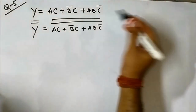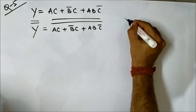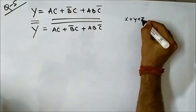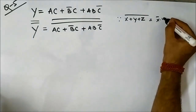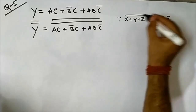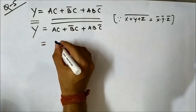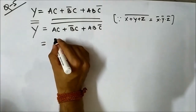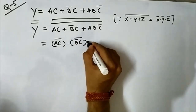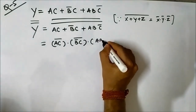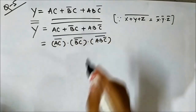Here we apply De Morgan's theorem, which states that (x + y + z)' = x'y'z'. Applying this, we get (AC)' and (B̄C)' and (AB C̄)' all complemented, with the whole complement on top.